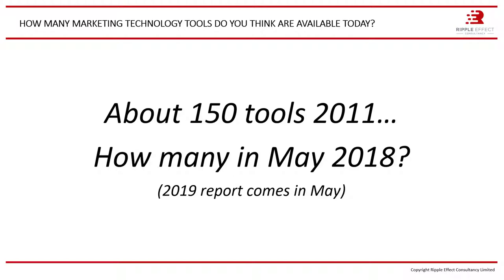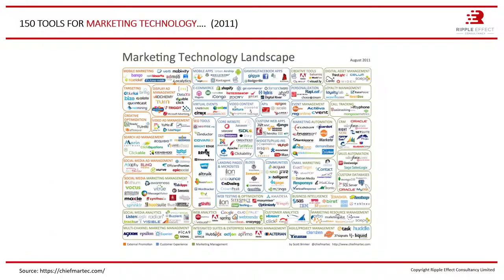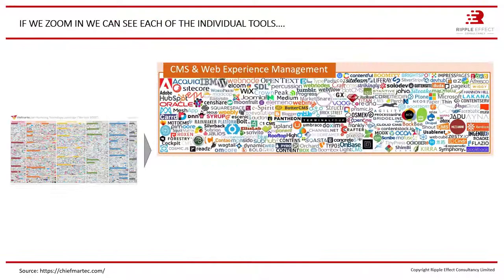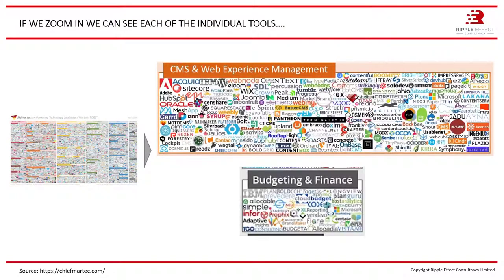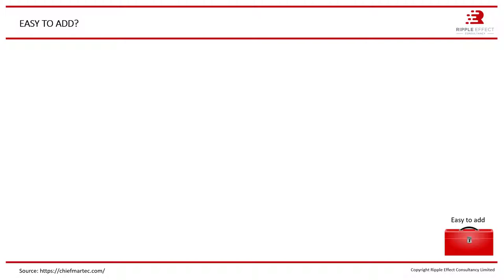If we had 150 tools in 2011, what's your guess? Here is the answer: over 6,800 tools for marketing technology. Each one of these colored dots you see here is an icon representing a specific tool from a specific company. Zooming in on CMS and web experience management we can see the tools; we can zoom in on budgeting and financing and see the tools. Almost all of these tools today are cloud-based software as a service, so no need to install on a local PC or server, which saves a lot of IT administration for all companies.